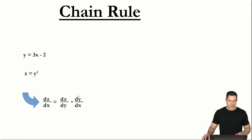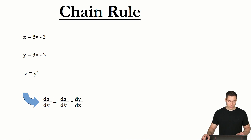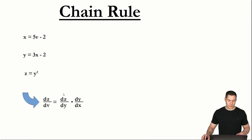The chain rule generally works regardless of how many functions there are, because you can arbitrarily expand this formula. So let's say x would also be a function of v. In that case, to determine the derivative of z with respect to v, you would multiply the derivative of z with respect to y, times the derivative of y with respect to x, and additionally multiply the derivative of x with respect to v.